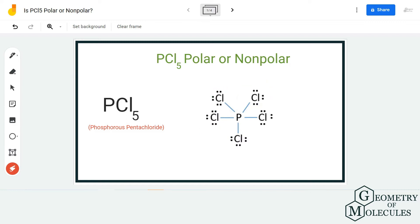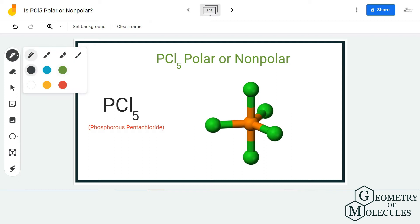To determine its polarity, we look at the polarity of the bonds, which we can determine by looking at the electronegativities of both phosphorus and chlorine atoms. If the difference of electronegativities is more than 0.4, the bond is polar.